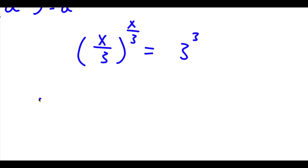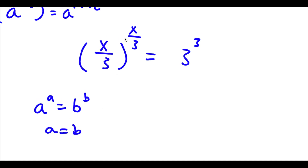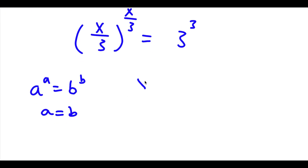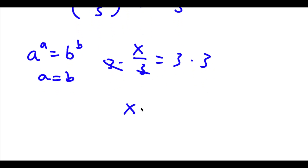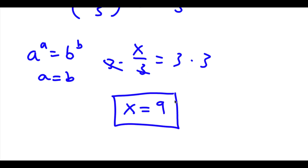Now if I have something in the form a to the power of a equals b to the power of b, this means that a equals b. So in this case x over 3 to the power of x/3 equals 3 to the power of 3, which means x over 3 equals 3. To solve this I simply multiply both sides by 3; these cancel out and I'm left with x equals 3 times 3, which is 9. So 9 is our answer.